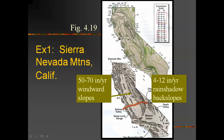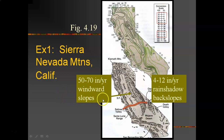I want to give two examples in the western United States. First is a really high mountain range in California called the Sierra Nevada mountains. This is a simple raised relief map of California, and the Sierra Nevada mountains are indeed over 14,000 feet tall. In fact, the tallest mountain in the lower 48, Mount Whitney, is located right there.